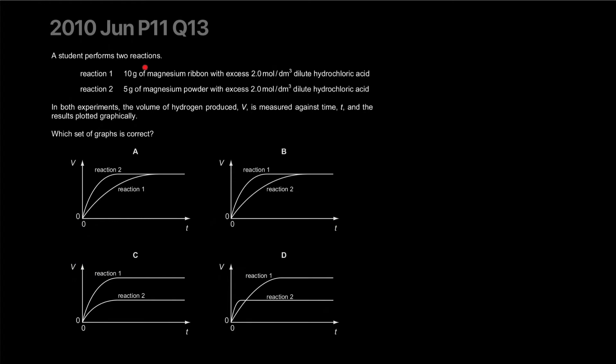A student performs two reactions. Reaction 1: 10 gram of magnesium ribbon with excess 2 mole per decimeter cubed. Reaction 2: 5 gram of magnesium powder. So powder versus ribbon - which will be faster? This is gonna be faster, but it's more quantity so it will also produce more.